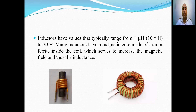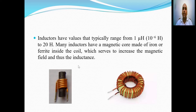The inductance of an inductor ranges from 1 microhenry to 20 henry. Many inductors have a magnetic core made of iron or ferrite material. Using an iron or ferrite core increases the inductance and the capacity to store magnetic energy in the inductor.